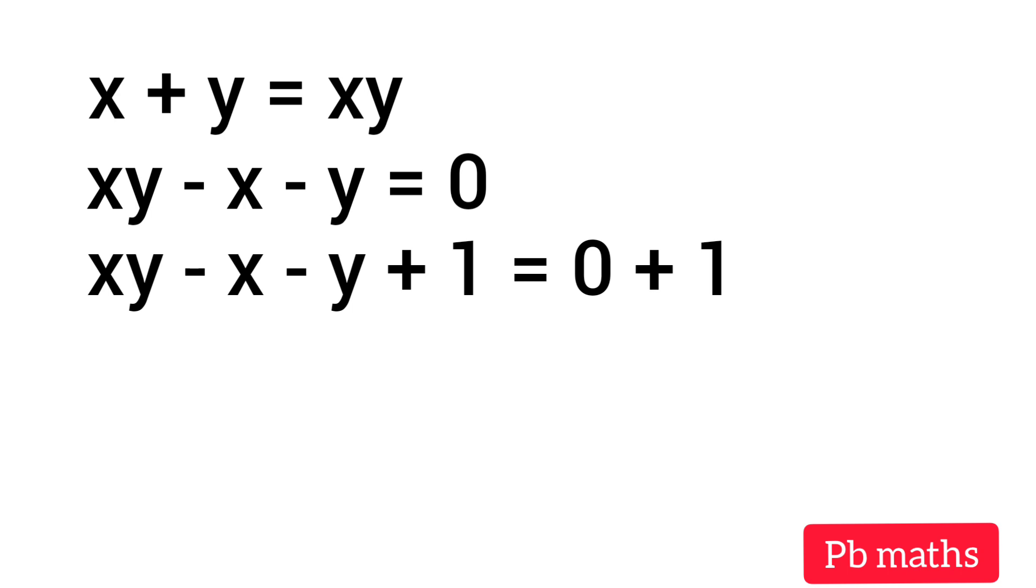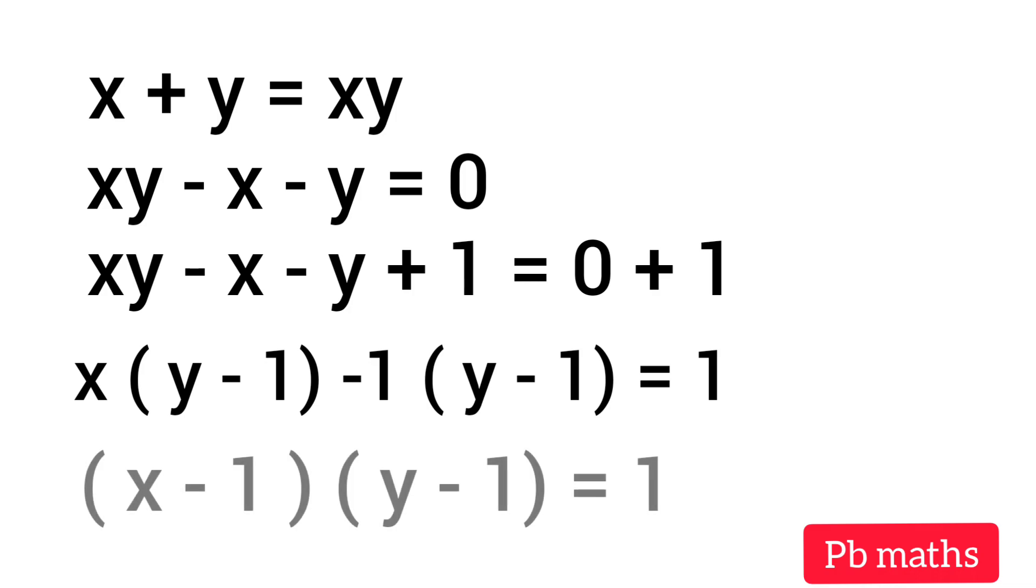Then let's factor out x from the first two terms. We have x times (y minus 1). Then from the next two terms, let's factor out minus 1. Then minus 1 times (y minus 1) equals 1. Then by rearranging, we can write (x minus 1) times (y minus 1) equals 1.